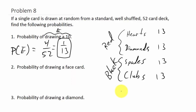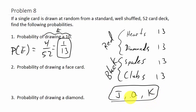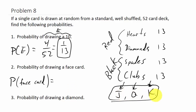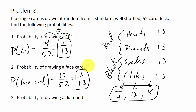What's the probability of drawing a face card? Face cards are jacks, queens, and kings — not aces. There are four of each, so 4 × 3 = 12 face cards total. The probability is 12/52, which simplifies to 3/13.